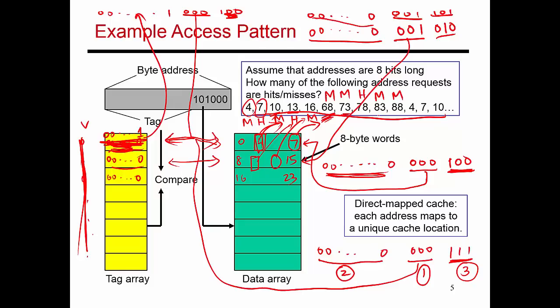And this is going to be a miss as well. This one is going to be a miss as well because an access to 83 brings in bytes 80 through 87. So when I subsequently access 88, that's going to be a miss as well. Now when I try to access byte 4, remember that byte 4 had been brought into the cache long ago. But when I brought in byte 68, that block evicted this entire block over here.